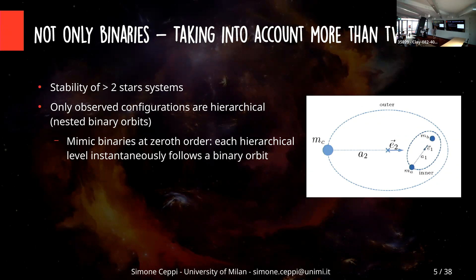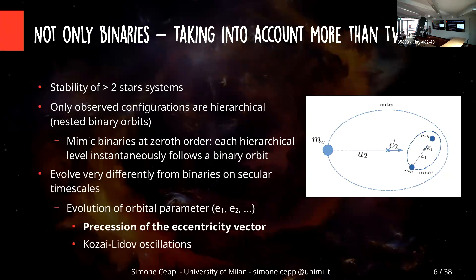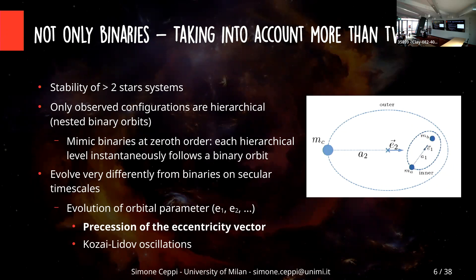Even though they do not exchange energy, they do exchange angular momentum. So the orbital parameters of each hierarchical level evolve with time on a secular timescale. For example, the eccentricity vector of each hierarchical level, E2 and E1, precesses with time — it changes direction with time. Also, if the outer and inner orbit are not aligned, or are misaligned under the right conditions, they can oscillate, and the eccentricity also oscillates with time. So at zeroth order, each hierarchical level behaves as a binary, but actually they are not — there are things going on that are typical of hierarchical systems.